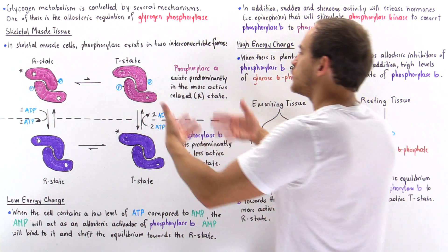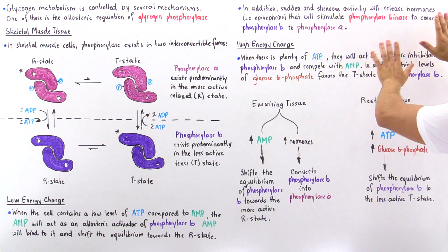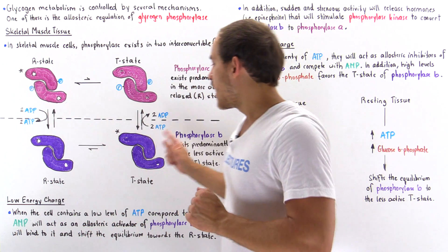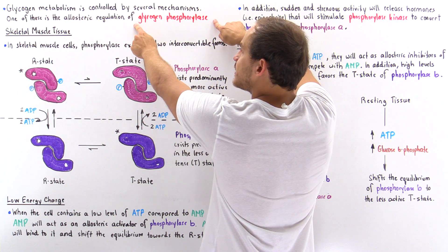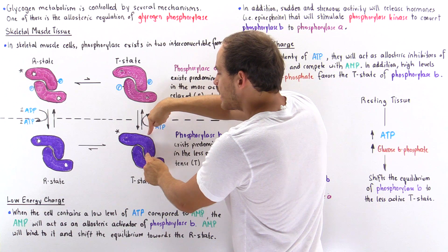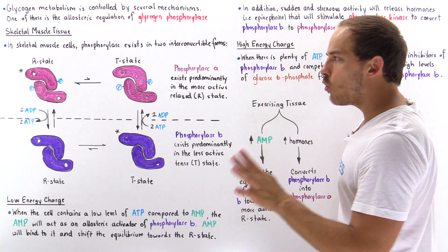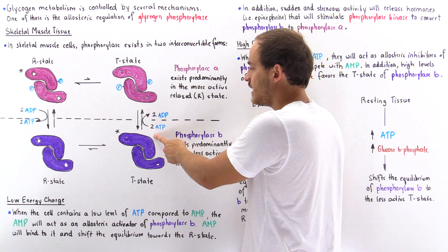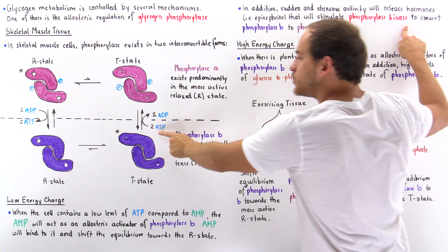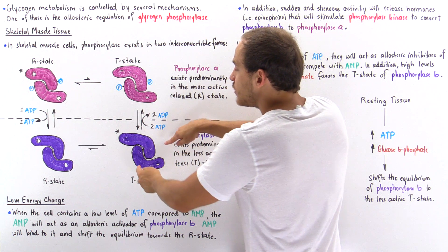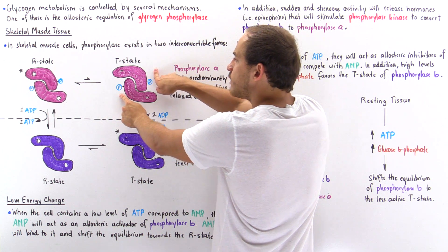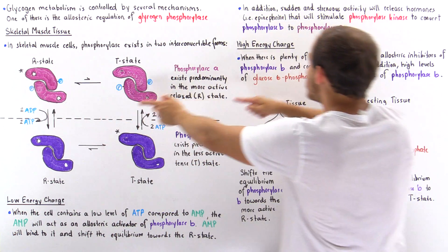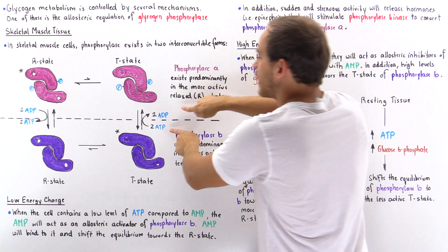To go from phosphorylase B to phosphorylase A, we use an enzyme known as phosphorylase kinase. It phosphorylates specific serine amino acids on glycogen phosphorylase. Since this is a dimer with two polypeptide chains, each chain has a serine at position 14. Phosphorylase kinase uses two ATP molecules to attach phosphoryl groups to the two serine-14 residues, thereby converting phosphorylase B into phosphorylase A. This conversion requires ATP molecules.